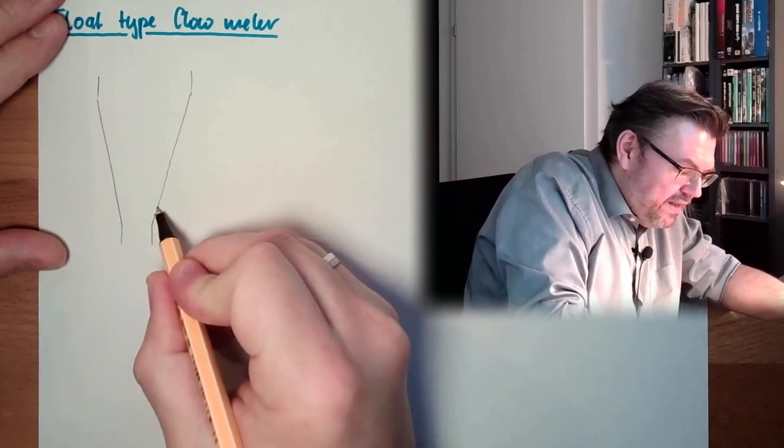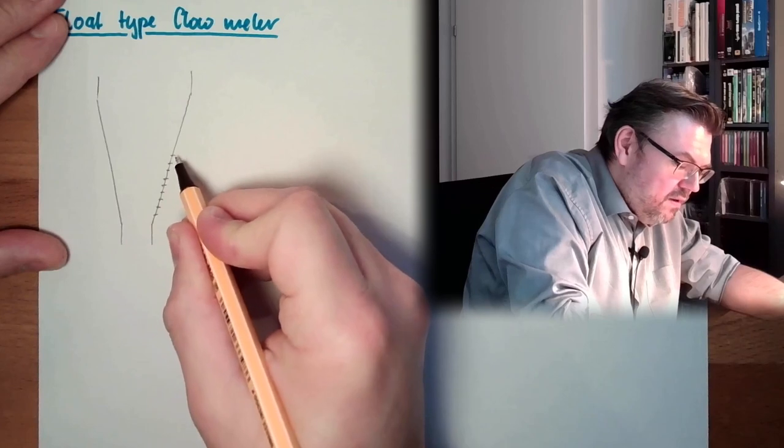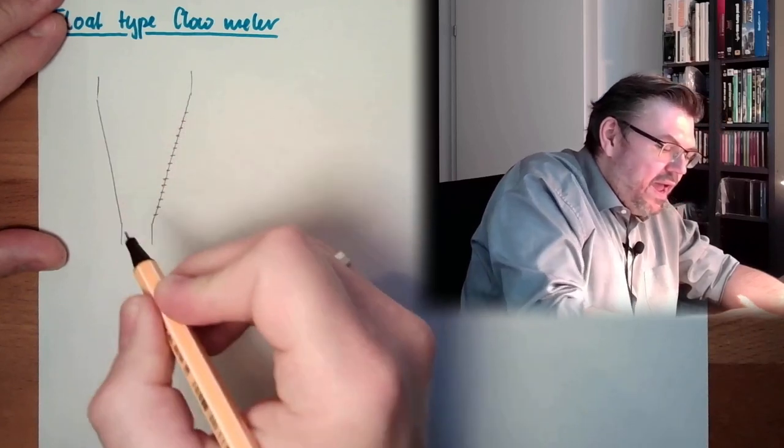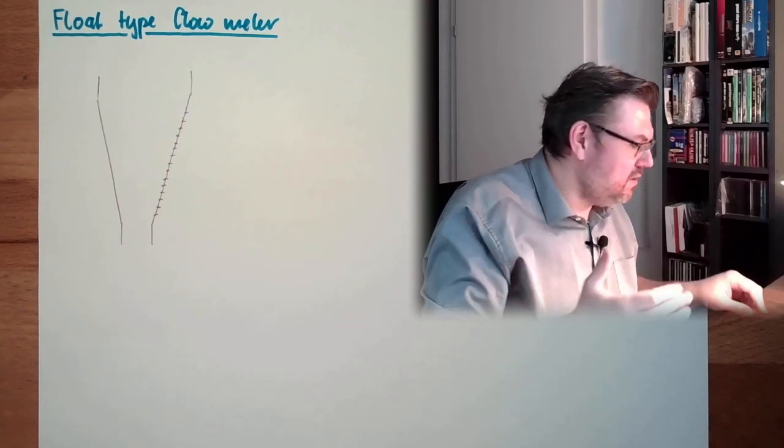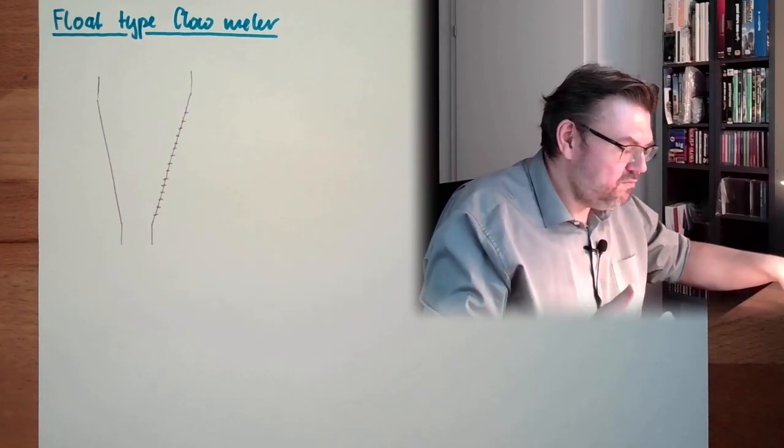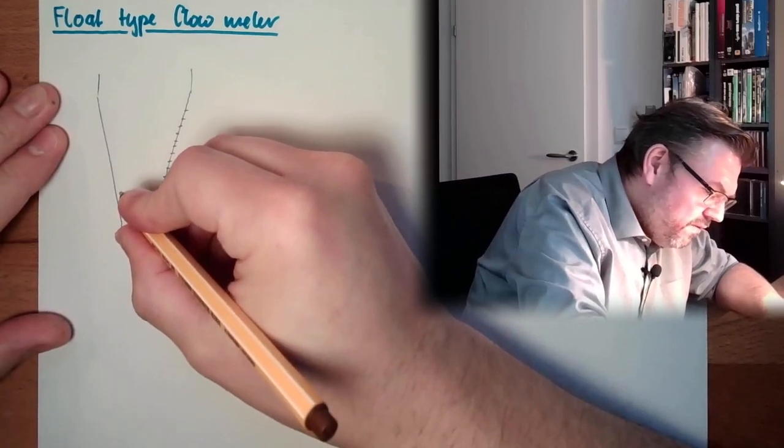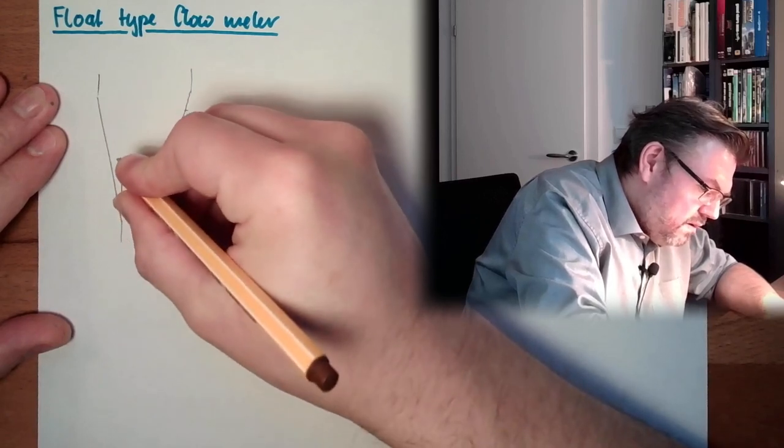And we have a scale here on one side. And in there we have some floater, a float object. Here we have it usually looking something like that.